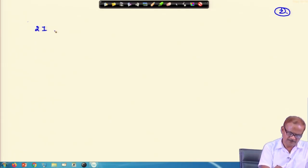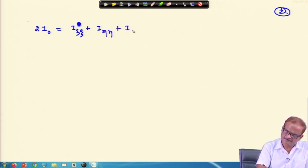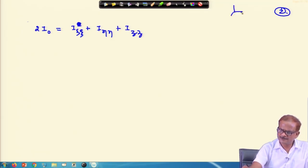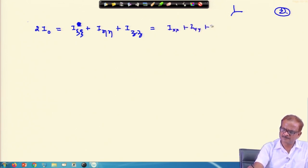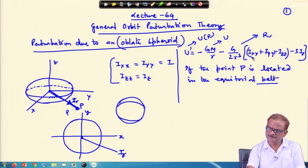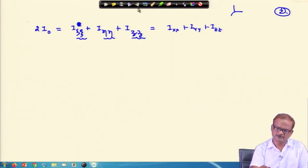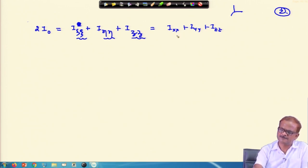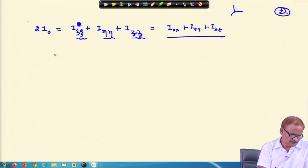We have already written 2*I₀ as I_ξξ plus I_ηη plus I_ζζ — that was just the coordinate notation used. It is convenient to write this as I_xx plus I_yy plus I_zz rather than using that notation, because ξ, η, ζ are along the x, y, z directions and therefore it is the same thing.